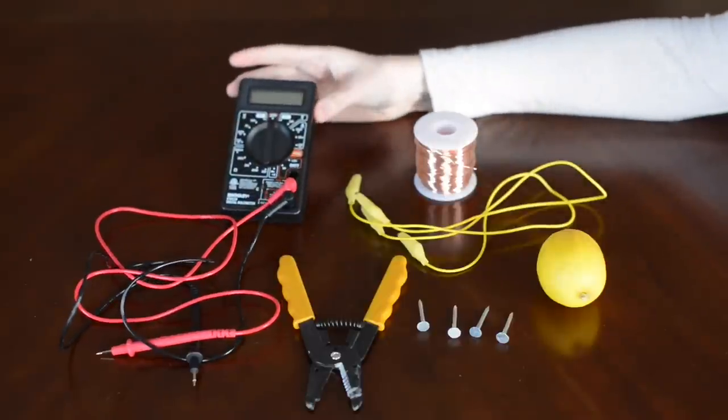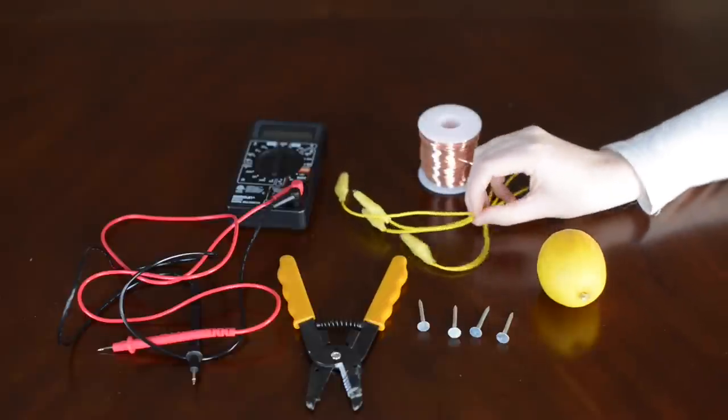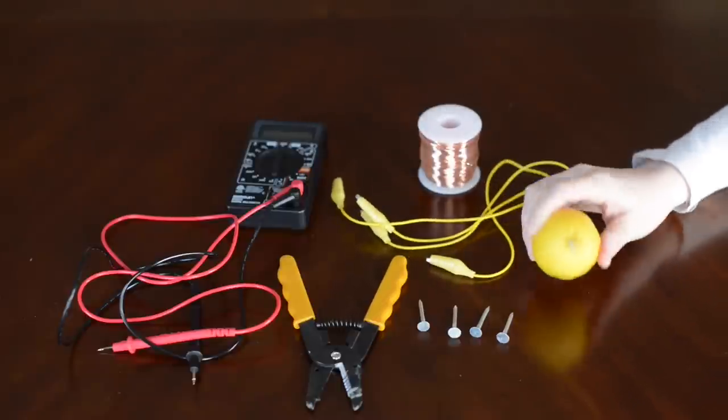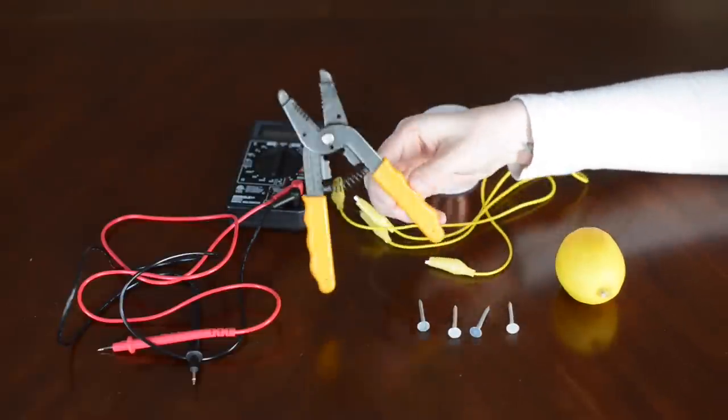What you need for this is a multimeter, some copper wire, some test leads, a lemon, some nails, and wire cutters.